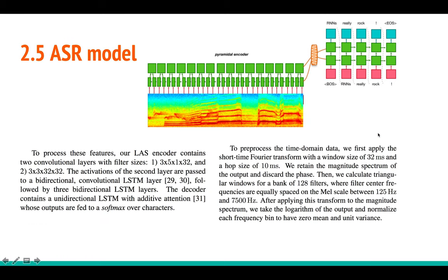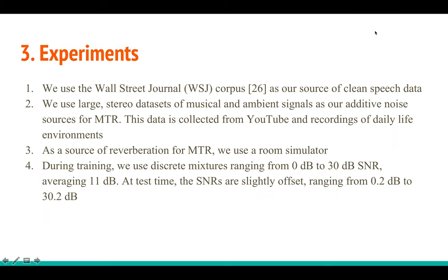The ASR model used is the Listen, Attend and Spell model, which takes a sequence of frames as input, passes them through bidirectional LSTMs, applies an attention mechanism, and then a recurrent neural network decoder predicts the words in the audio. The full FSE-GAN pipeline takes the noisy spectrogram as input, generates a clean spectrogram, and feeds that to the ASR model which predicts the transcript.